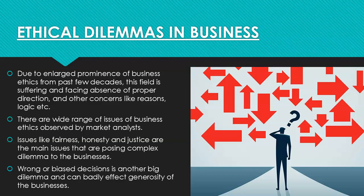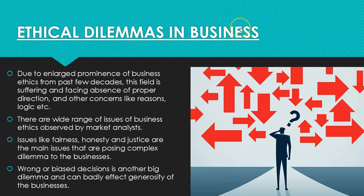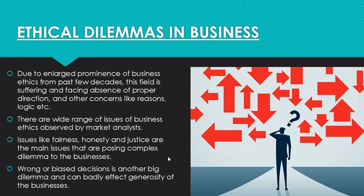Moving on, we were doing ethical dilemmas in business. I hope the definition of dilemma, how it's related with ethics, and how these two words — ethical dilemmas — are then related with business are clear. These are some interconnected words which are very important to understand. We went through them in quite some detail. Generally, we discussed some of the issues a business faces, like fairness, honesty, and justice, which are the main issues posing complex dilemmas to businesses.